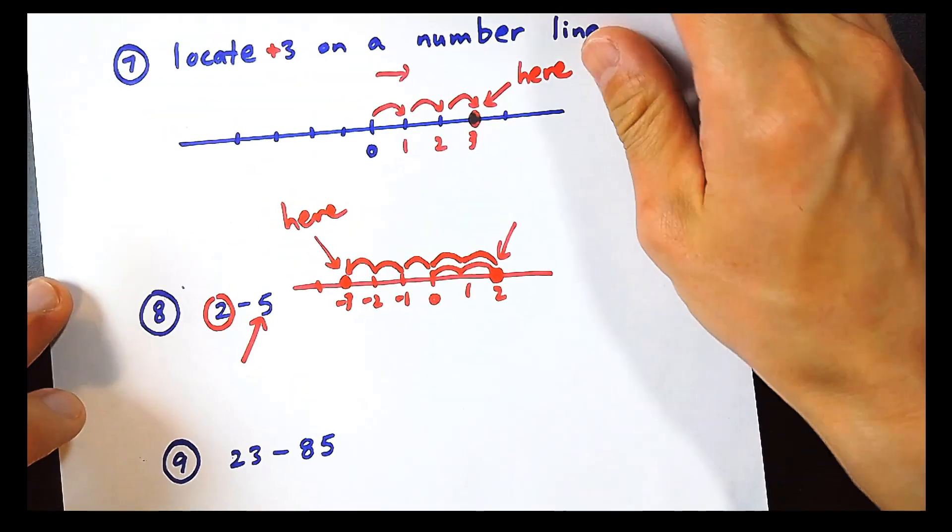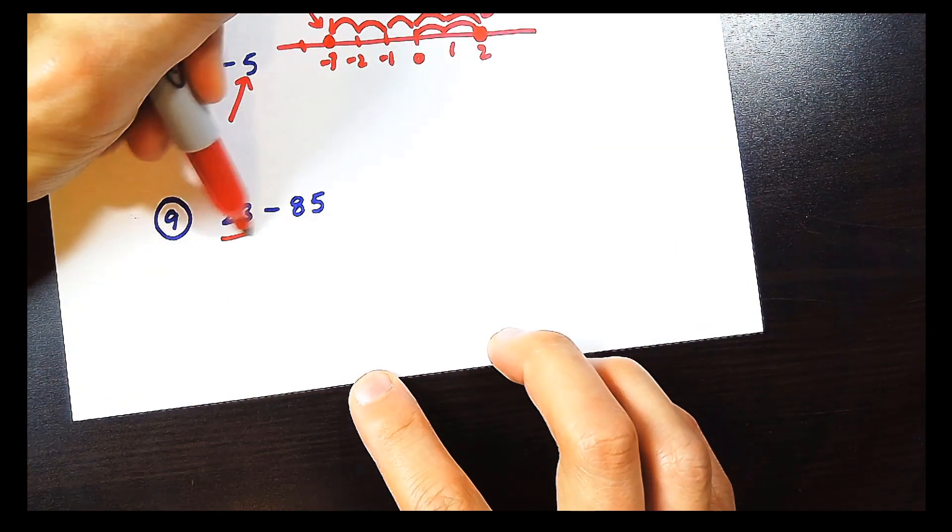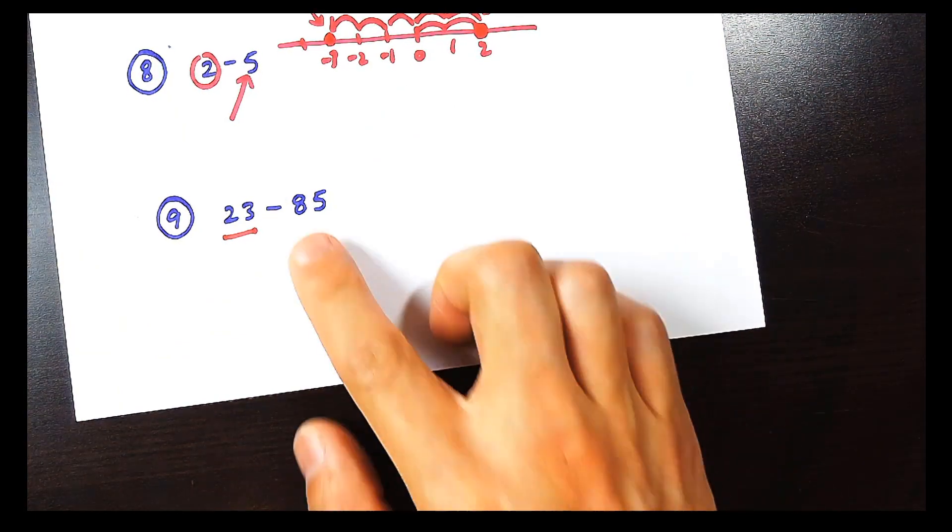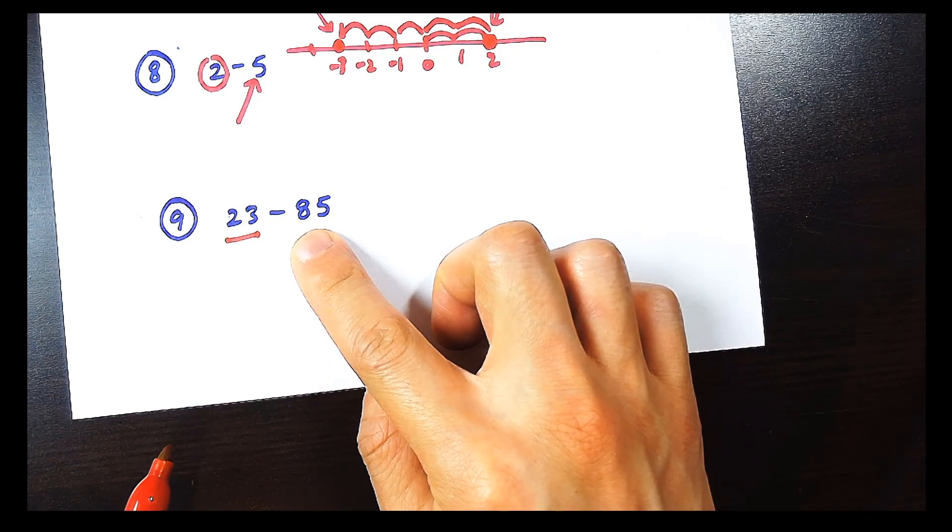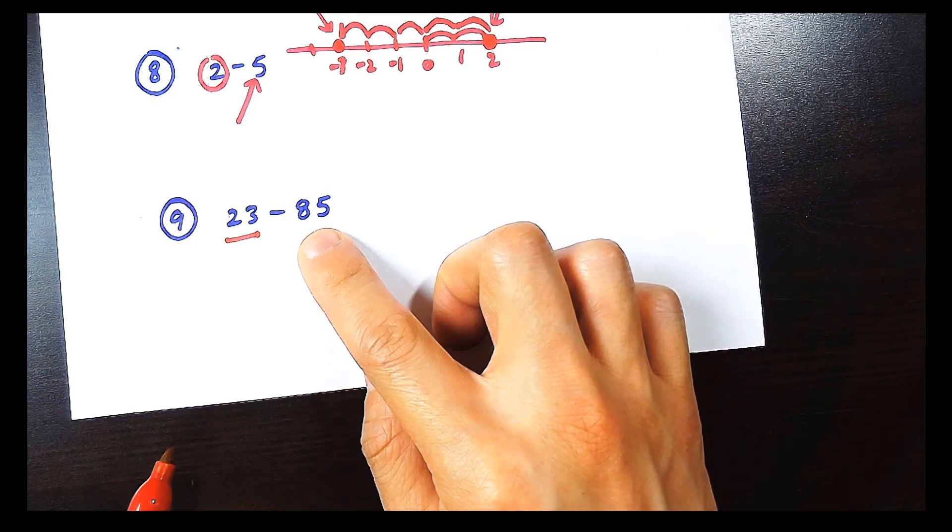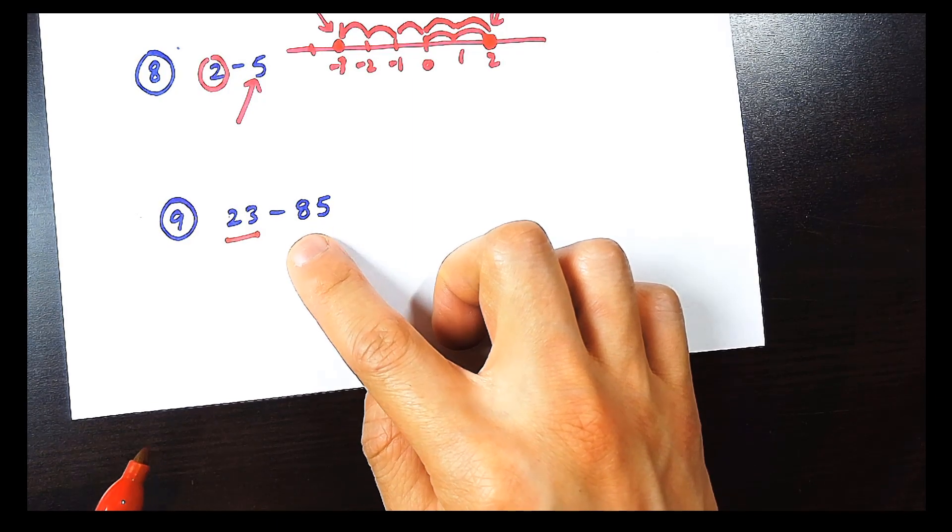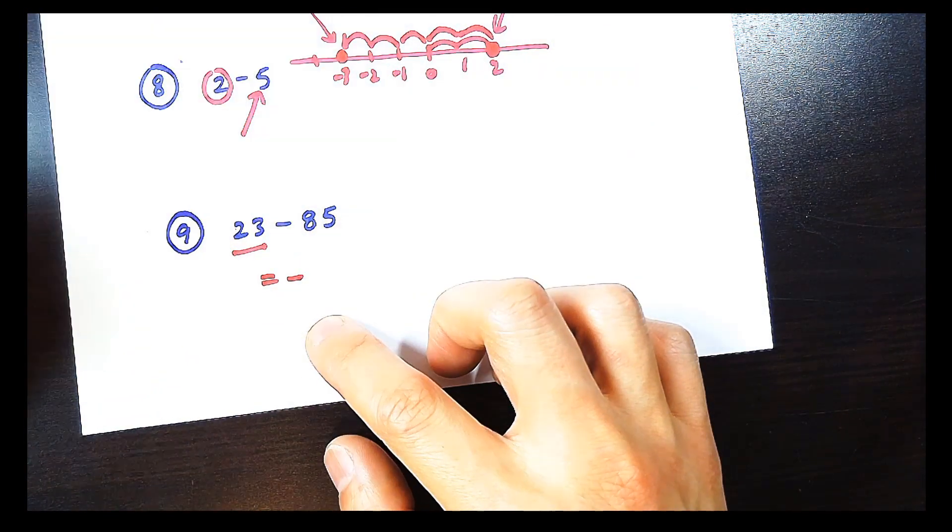So the last question here we have is 23 minus 85. Now you have some money. You have 23 dollars. But you're going to spend and buy something out of your budget. It's way too expensive. Minus 85. Do you have positive money or do you have negative money? I'm sorry, but you have worse than zero. You have negative money. So definitely the answer is negative, for sure.